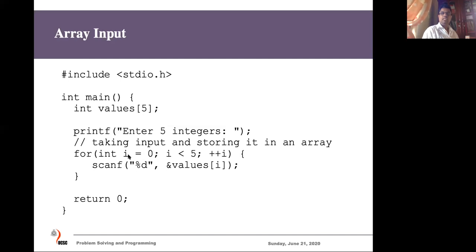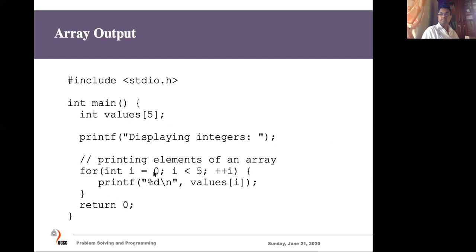In the first iteration, i is zero so it reads into values[0], then i becomes one and reads values[1], and so on. To print the array elements, we again use a for loop running from zero to four. Using printf, we pass values[i]. The first time i is zero, it prints values[0], then values[1], values[2], values[3], and values[4]. This for loop prints each and every value on the terminal.